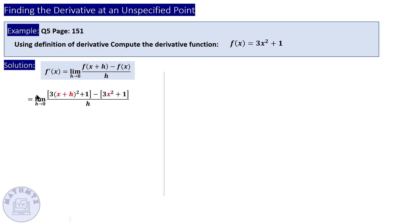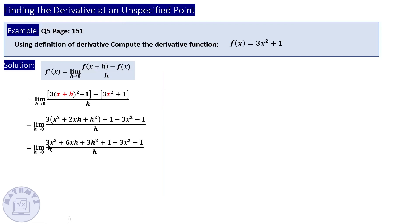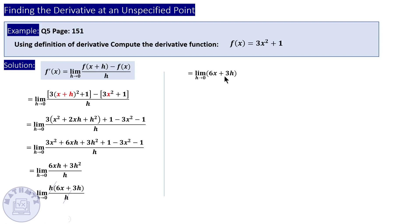This will be three times (x plus h) all squared plus one, minus f of x, over h. Now expand the square of the sum: first squared plus two times the first times the second plus the second squared, then distribute three inside. Combine like terms and cancel out 3x squared with negative 3x squared and one with negative one. Take h as a common factor, cancel it with the denominator, and now we have the limit when h approaches zero for 6x plus 3h.